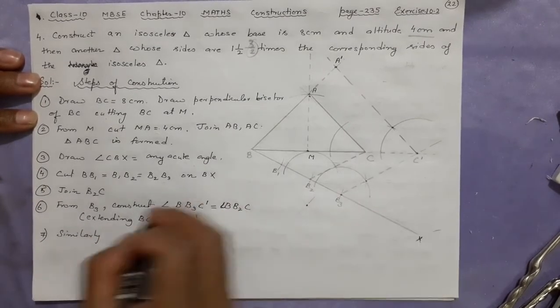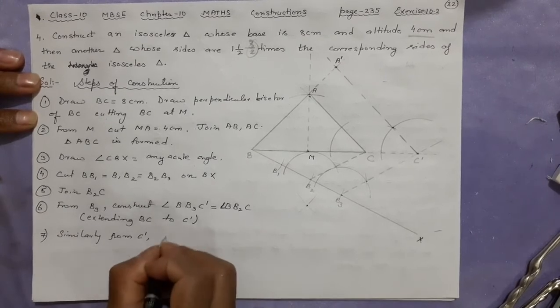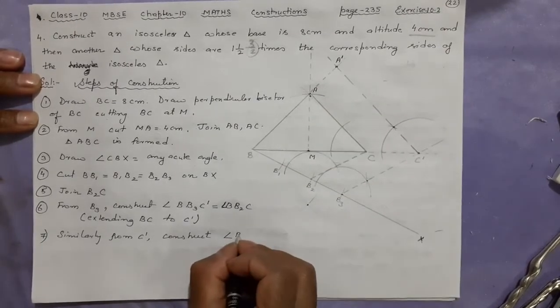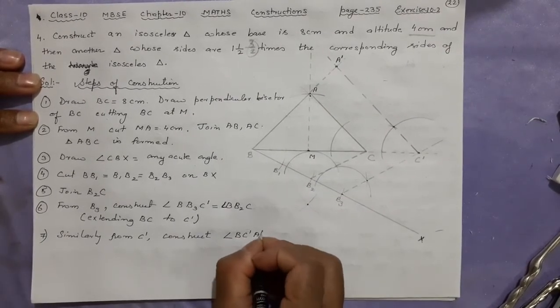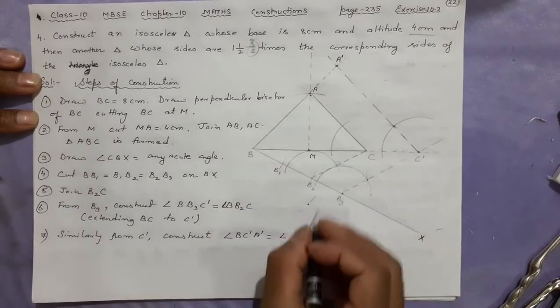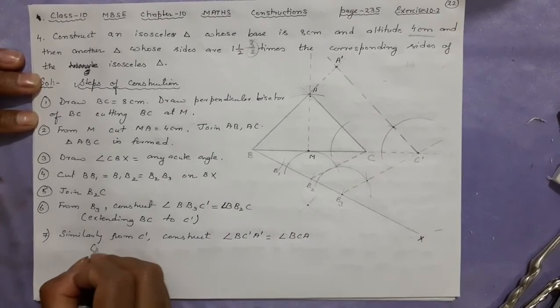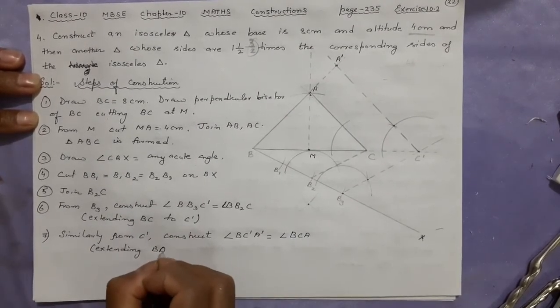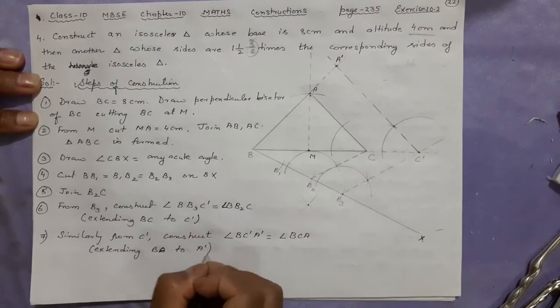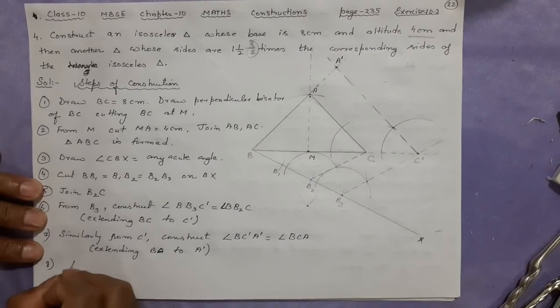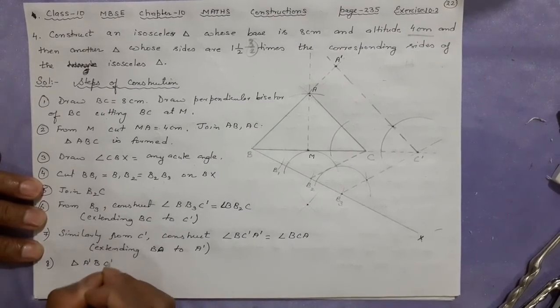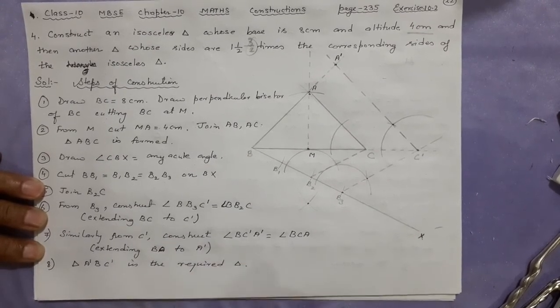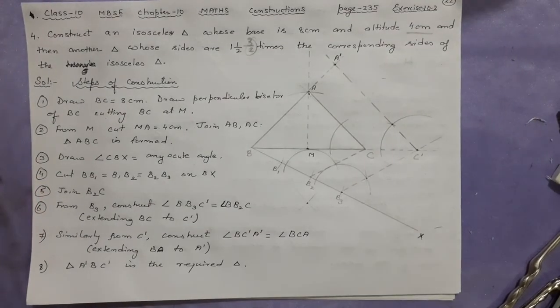Number seven: Similarly on reaching here, from C dash construct angle BC dash A dash equal to angle BCA. Here also you did that extending BA to A dash. Done. Triangle A dash BC dash is the required triangle. No need to write the detail that it is such and such, it is understood. Thank you.